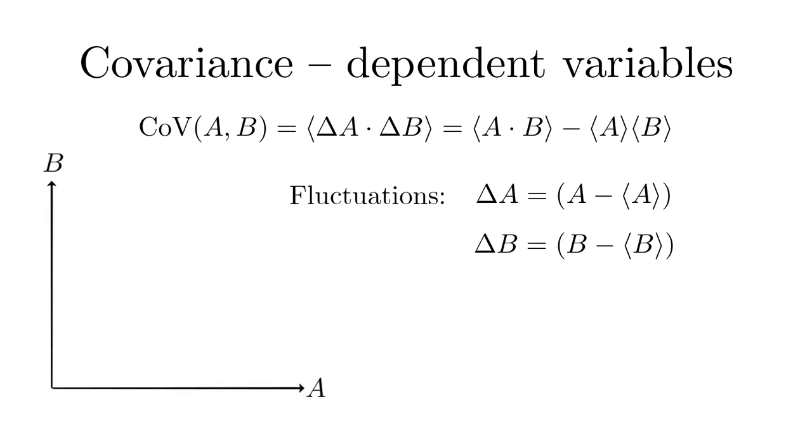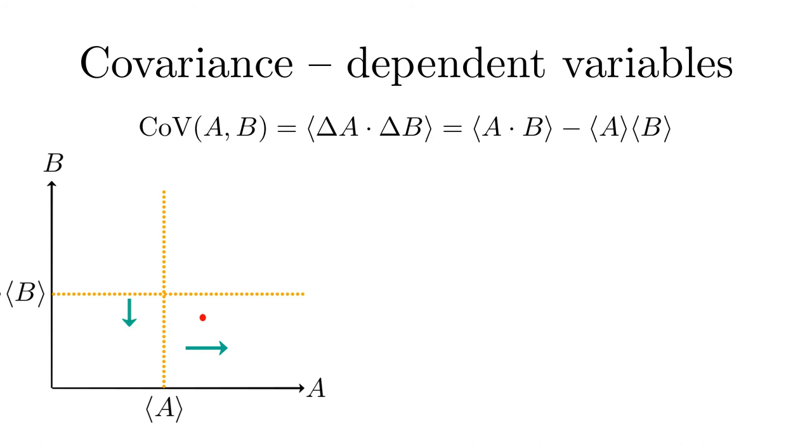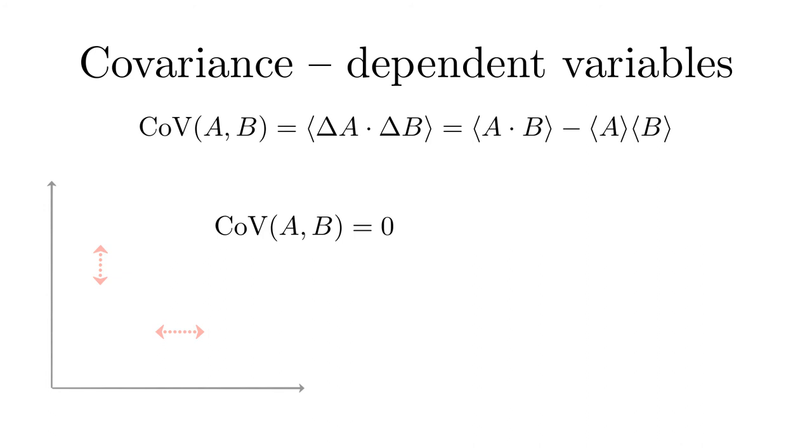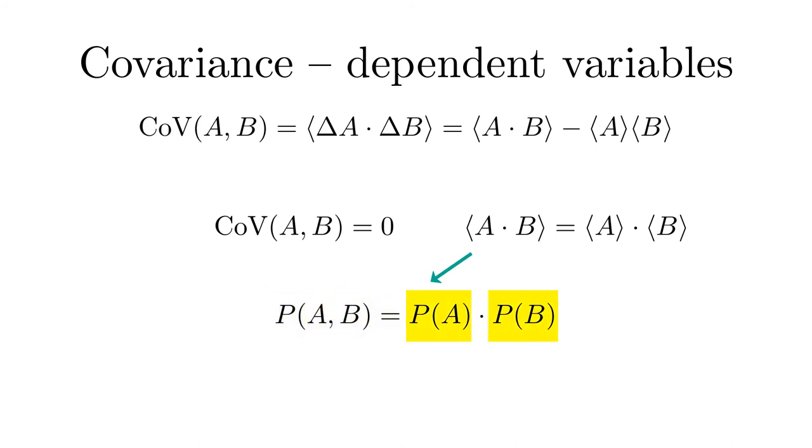Another important object in the analysis of random variables, or generally in inference problems, is the covariance, which allows to identify correlations between different features A and B. It shows whether on average an increase of A above its mean is associated with an increase of B above its mean, or whether it is associated with a decrease of B below its mean. For example, we could test whether in a population a person's weight is correlated or anticorrelated with his or her height. If fluctuations of one feature are independent of fluctuations of the other feature, then the covariance is zero. That implies, according to its definition, that the mean of a product is the product of the means. And therefore, the joint probability factorizes into the product of the marginal probabilities.